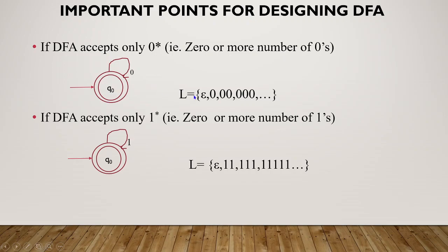Epsilon is accepted in the acceptance state. Next, if you accept zero, it will be the DFA. Q0 will be on input 0, and Q0 will be accepted — the accept state will be the same. One zero will be accepted. Two zeros — one zero is a loop, and another zero is also a loop. How many zeros will be accepted? These are the basic combinations. This is 0 star — how many stars are there, the loop handles it.